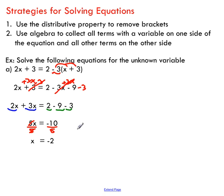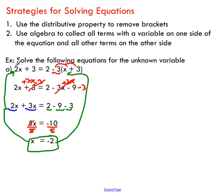If you want to check your answer, take the x value you found and substitute it back into the original equation everywhere you see an x. Check to see if your left side equals your right side. If it does, you've solved for the correct x value. If you've made a mistake, the left and right side won't equal each other — go back and check your work to make sure you haven't broken any algebra rules.